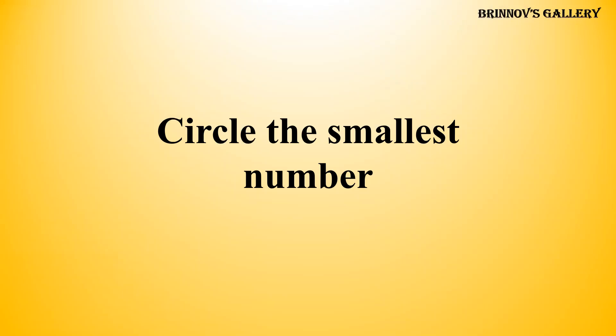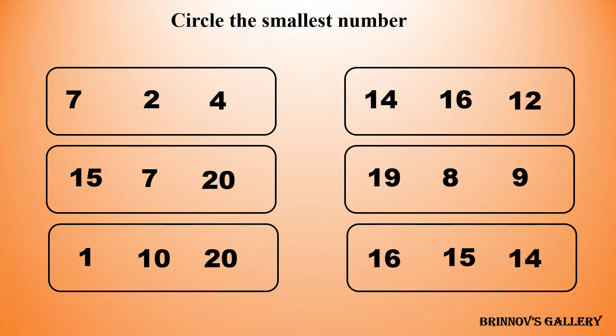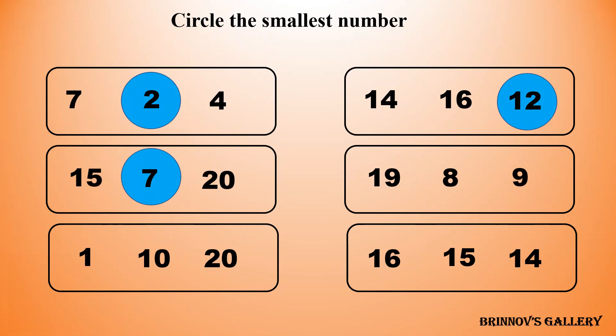Circle the smallest number. 7, 2, 4 — 2 is the smallest number amongst all the others. 14, 16, 12 — 12 is the smallest number amongst all the others. 15, 7, 20 — 7 is the smallest number amongst all the others.